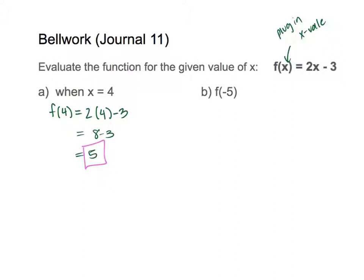Here's something beginners do wrong: when they see f(4), they bring it down and think f is a variable — like dividing the 4 over, getting 5 over 4. Don't do that. The f is not a variable. The f is a mathematical notation to say this is a function, and you need to plug in this value for x. That's all it means.